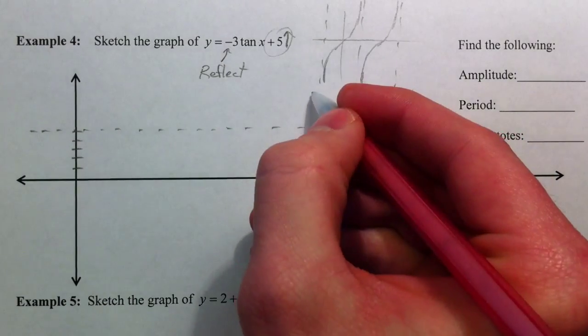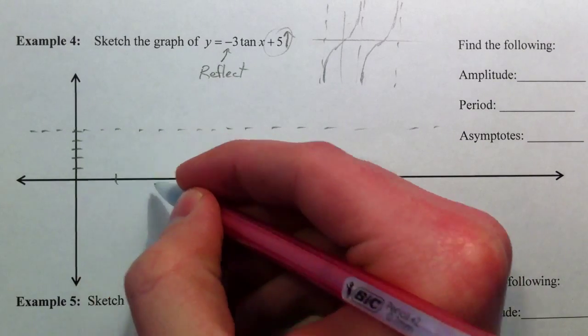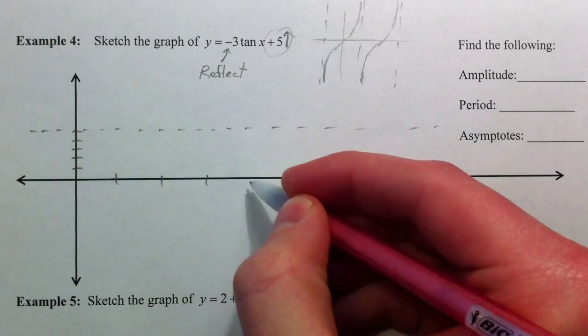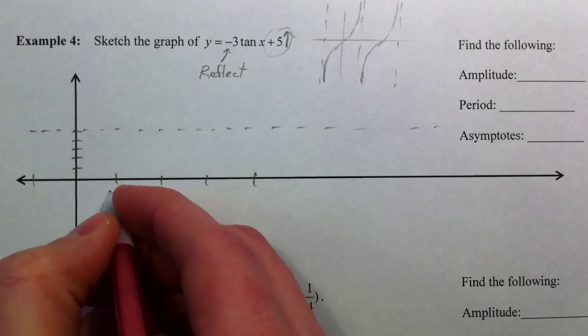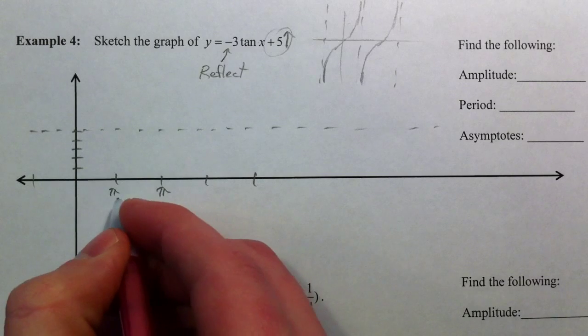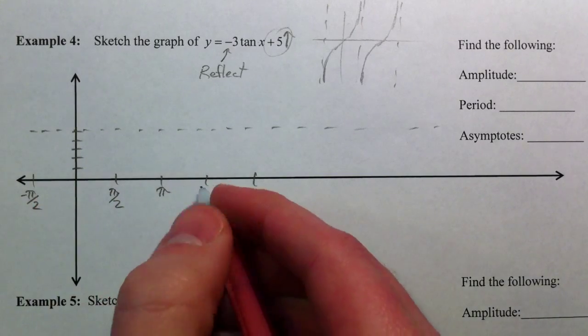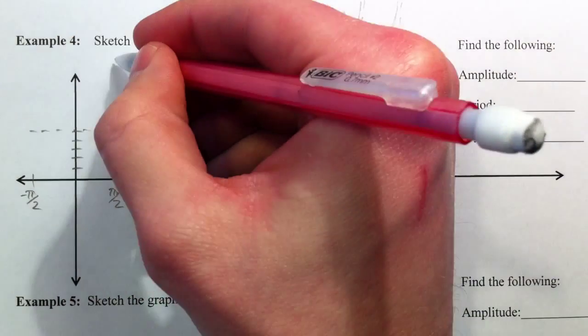Things to keep in mind as well is where our asymptotes go. Our period is pi. I'm going to mark pi over 2s because at pi over 2, we're going to get our asymptotes.